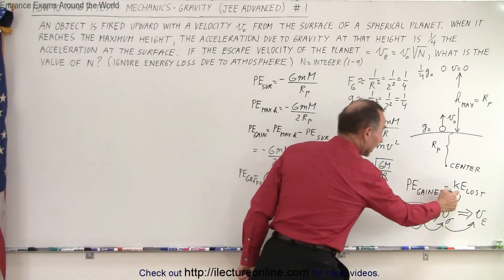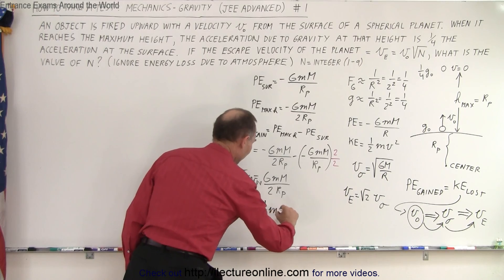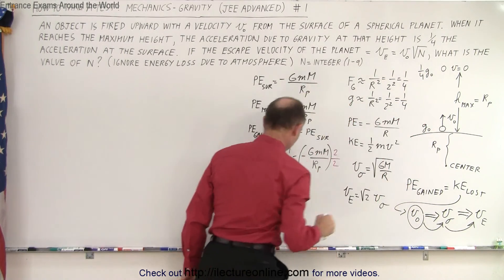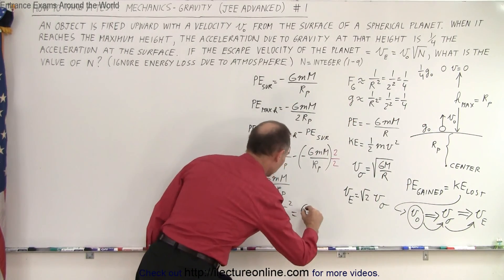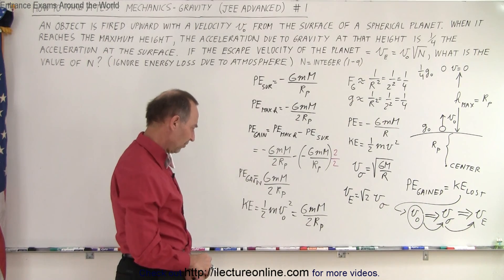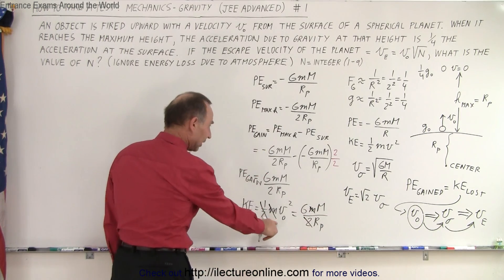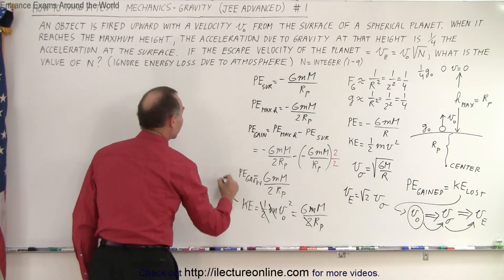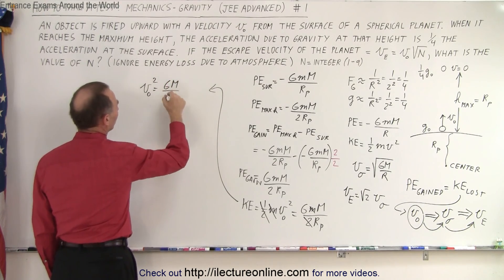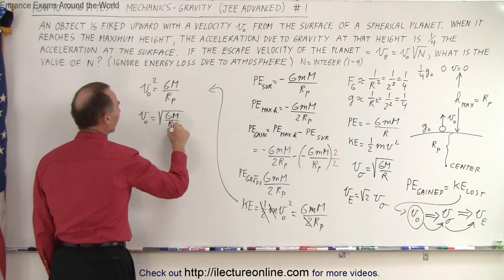That potential energy gained must equal the kinetic energy lost. So one-half m v-initial squared equals GM big M over 2 times the radius of the planet. Both sides are divided by 2 and both have little m, so those cancel. Therefore, v-initial squared equals GM over the radius of the planet, which means v-initial equals the square root of GM over the radius of the planet.